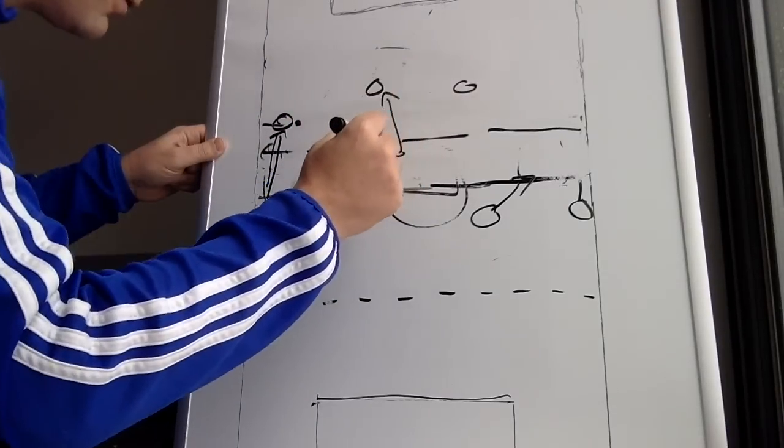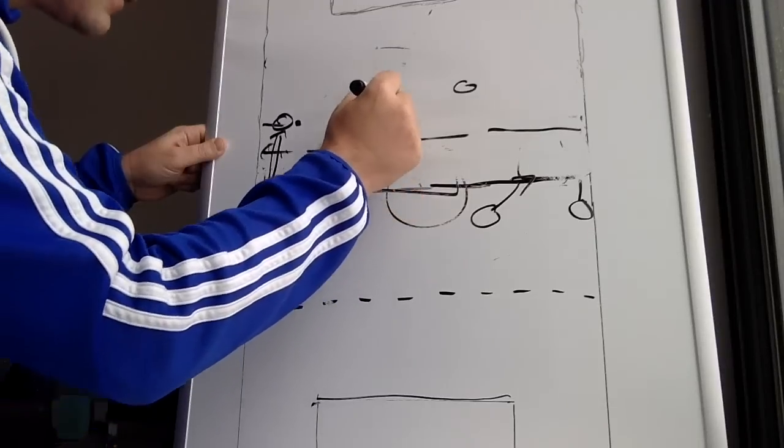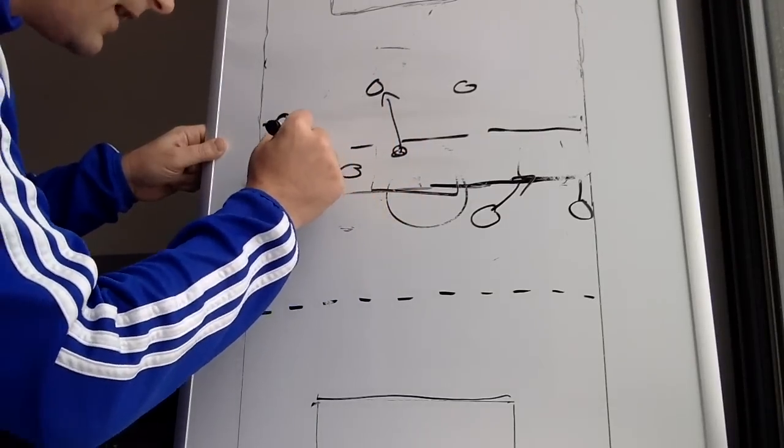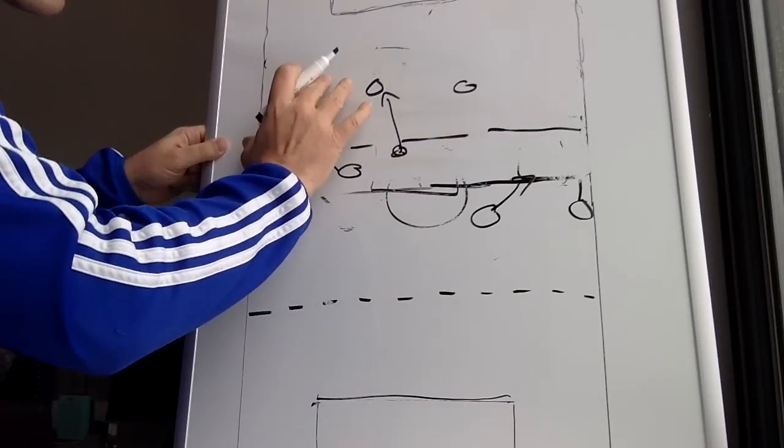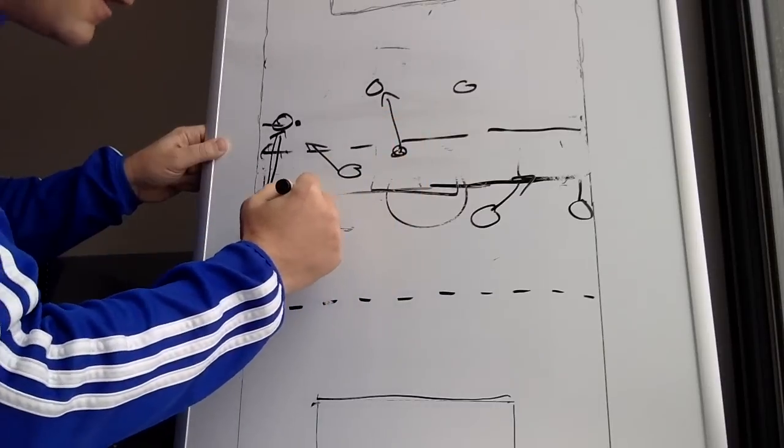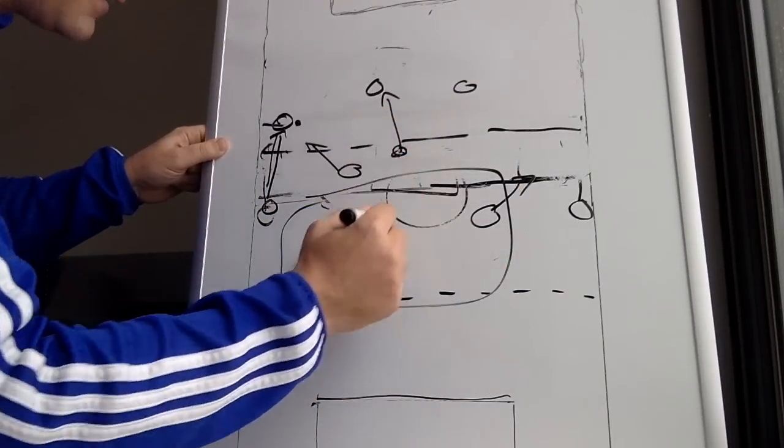Our forwards will cross that line. The forward will always cross this line to force this ball in. Even our center mid can cross that line. So now you're talking about one, two, three players crossing the line of confrontation. But the bulk of the team is behind the line of confrontation.